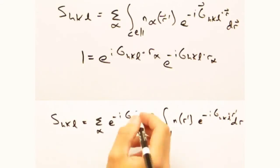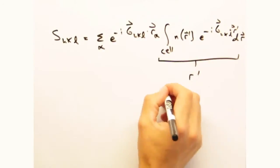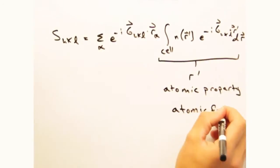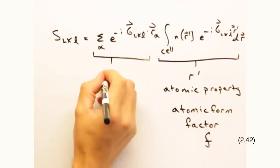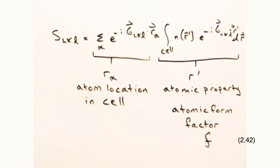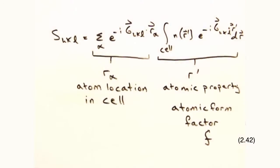but what it allows us to do is separate the terms of the structure factor equation into two general categories. One, into terms that deal with the scattering from each atom, which we condense into one term called the atomic form factor. And two, this term here, that gives where the atom is located within the cell. To really show this technique, let's go through a couple of examples.